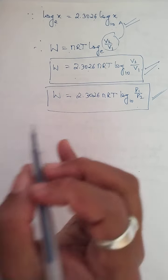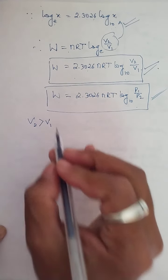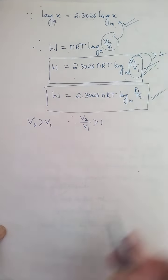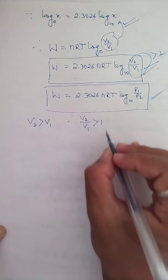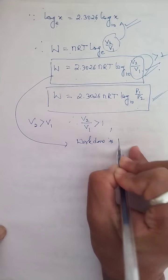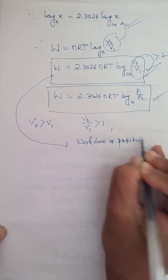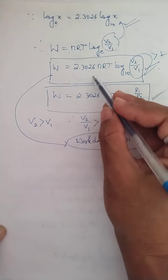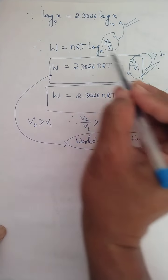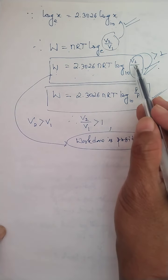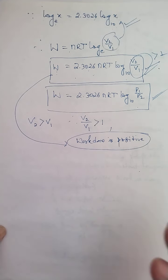As the gas expands, V2 is greater than V1, so V2/V1 is greater than 1, meaning log(V2/V1) is positive, and therefore work done is positive. Under isothermal expansion, work is always done by the gas and is positive.